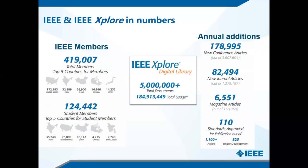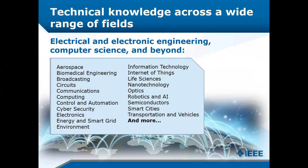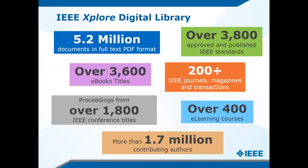IEEE has been growing tremendously. We now have almost 420,000 members, and in terms of IEEE Xplore it has over 5.2 million documents — actually more than 5.2 million, and every year a lot of new content is added. If you are a researcher or student from a university, you may want to let me know using the chat whether your school has IEEE Xplore. Do you know if your school has IEEE Xplore? If they do, you can tell me your school name.